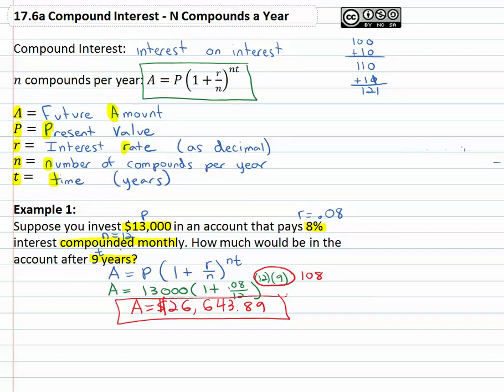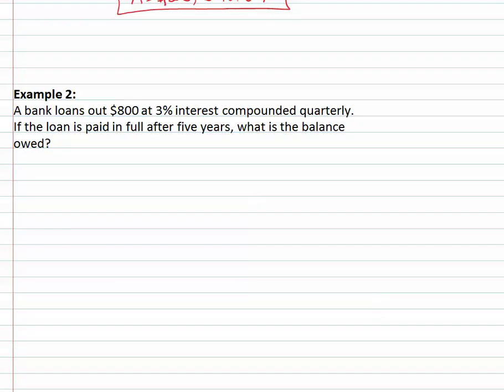Let's try another example, where we find out how much money we end up with, but this time we're going to work the interest against you. It's going to be an eight hundred dollar loan, at three percent interest compounded quarterly, a quarter is three months long. If the loan is paid in full after five years, what is the balance owed? And I'm telling you, I'm going to give you this formula, A is equal to P times one plus R over N, all to the NT power.